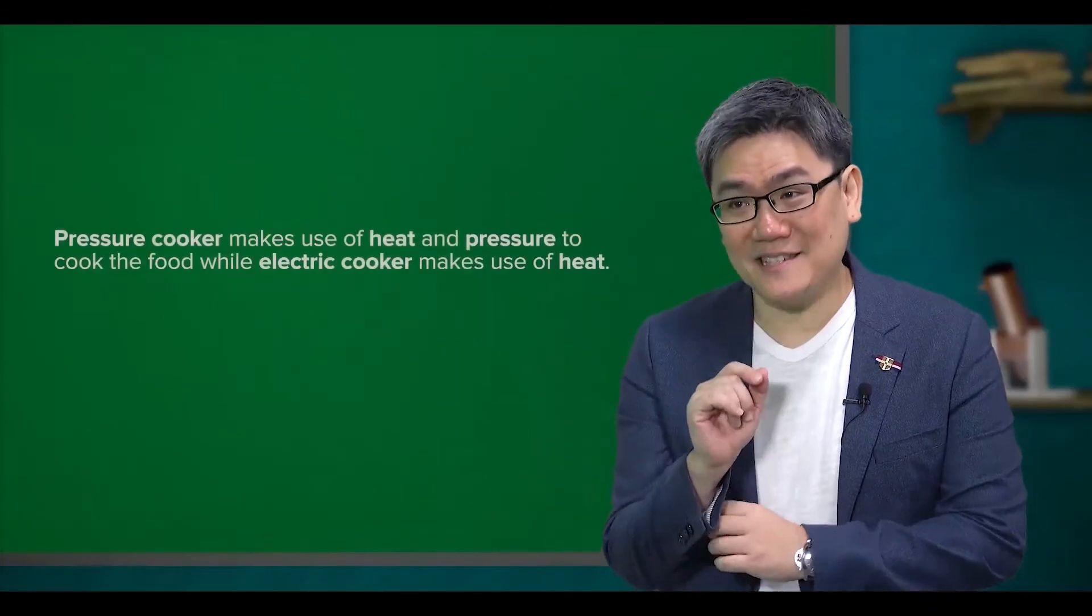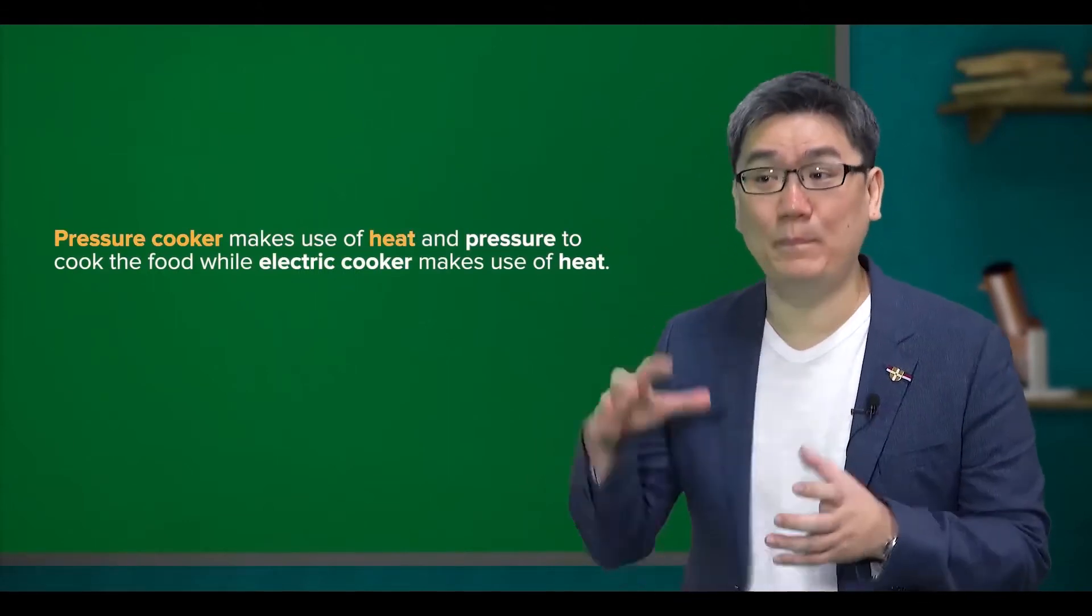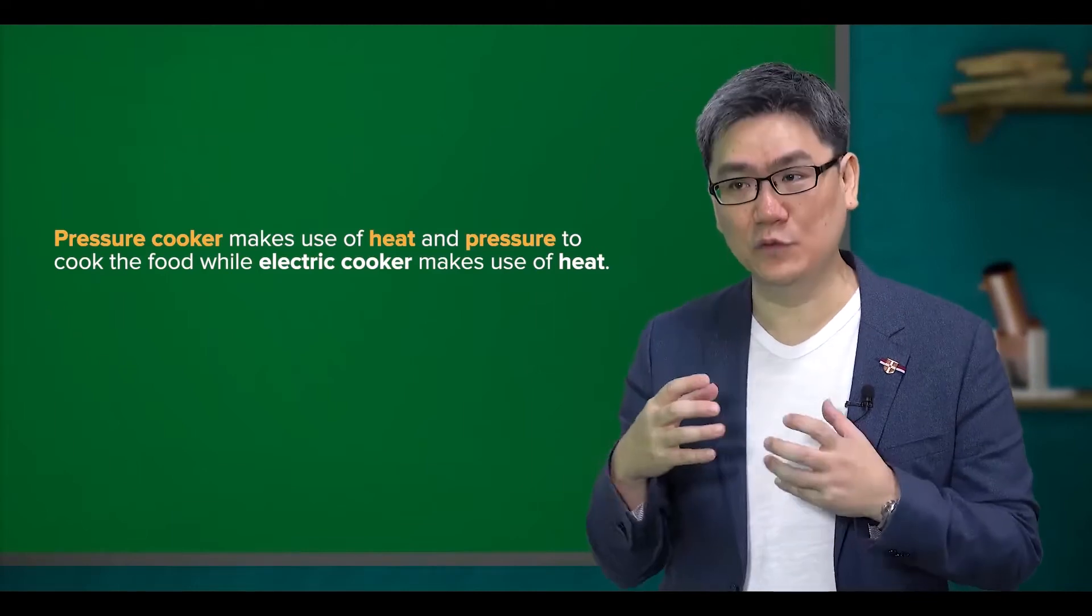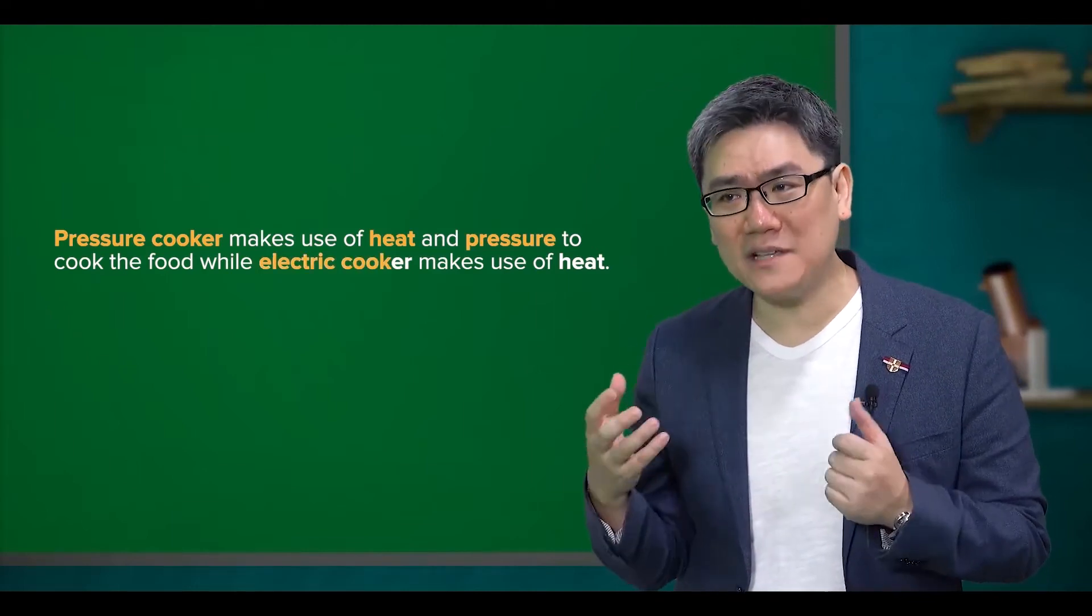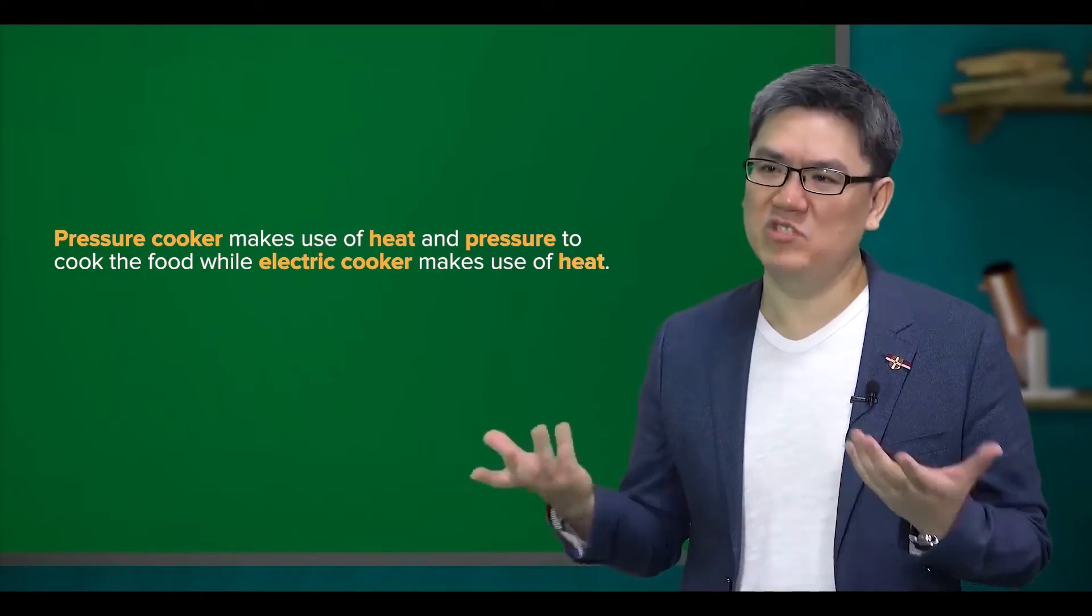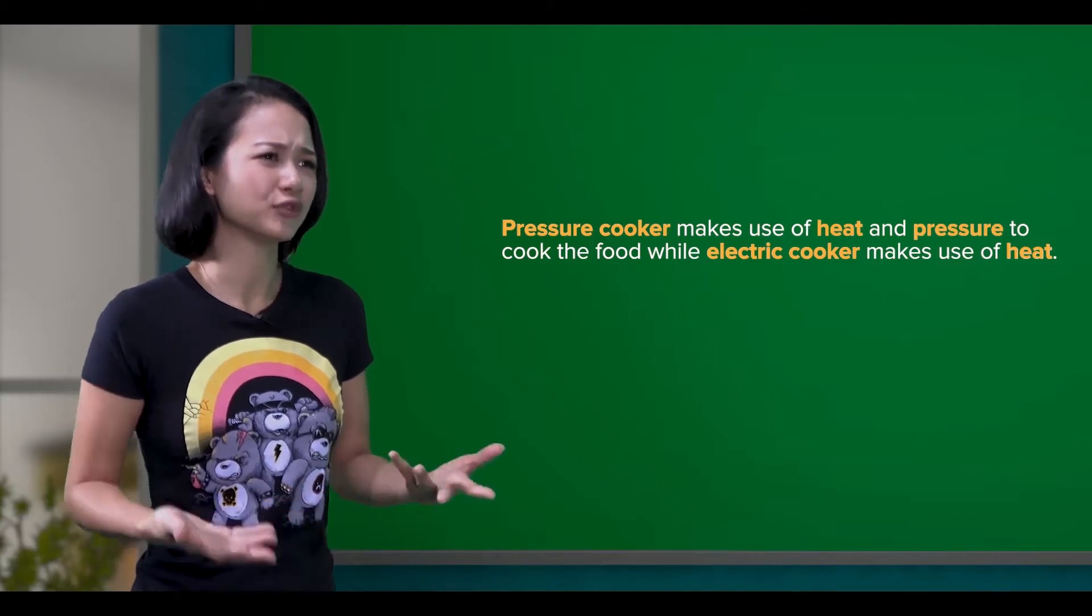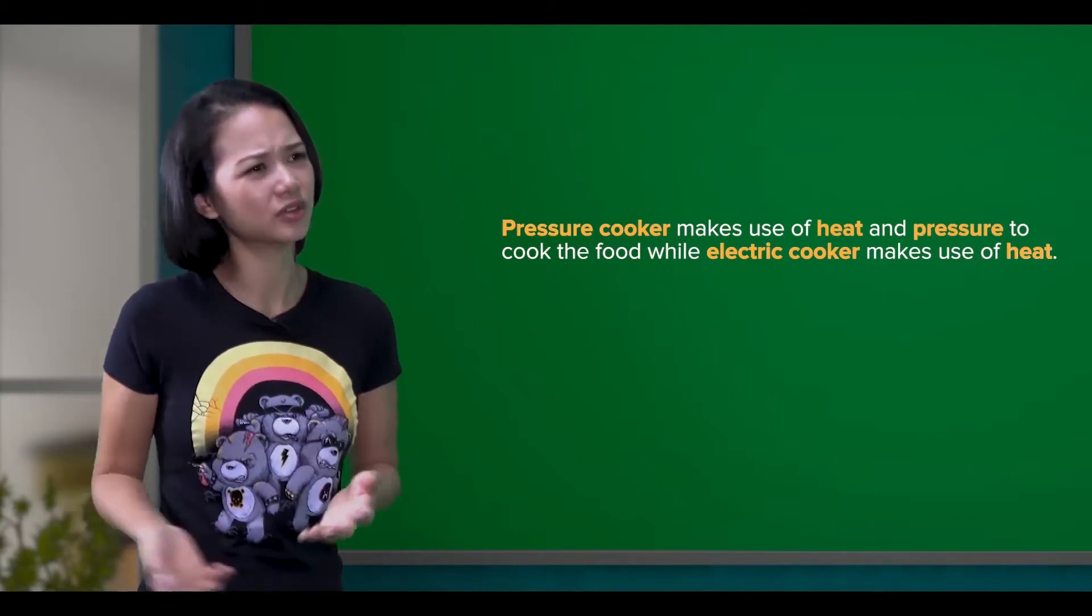Well, as the name suggests, a pressure cooker makes use of heat and pressure to cook the food, while electric cookers only make use of heat to cook food, just like a gas stove. But how is pressure used to cook food? Isn't food supposed to be heated up for it to be cooked?